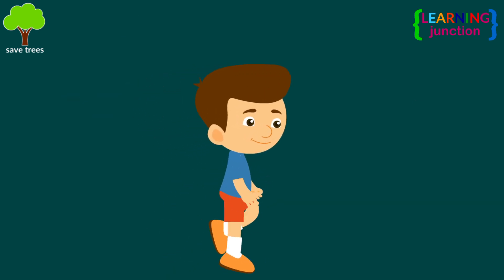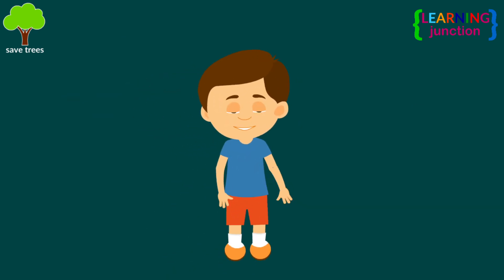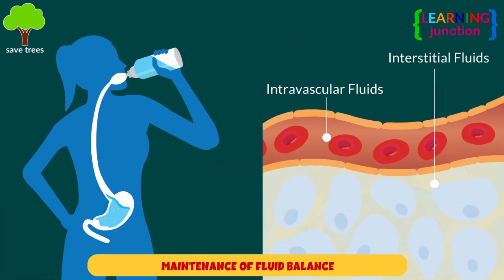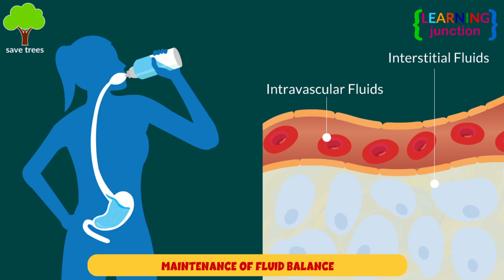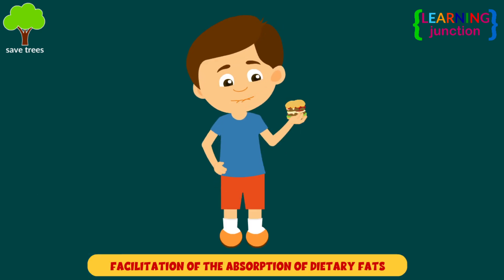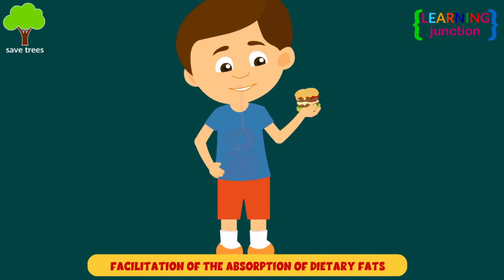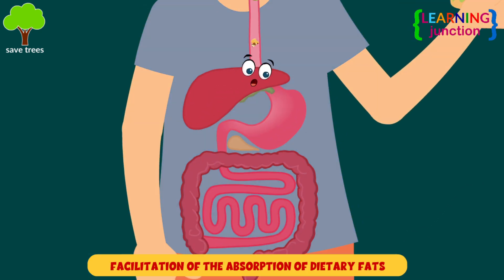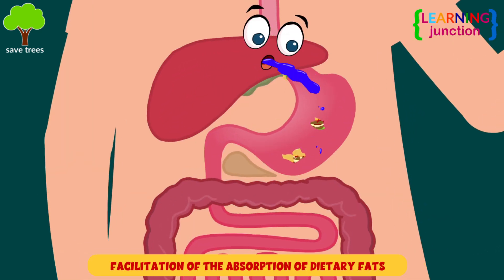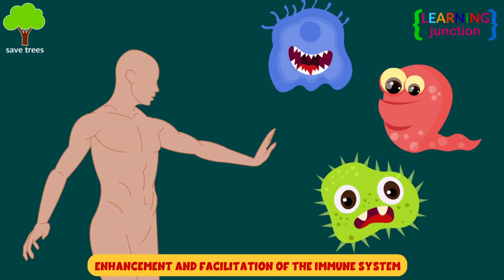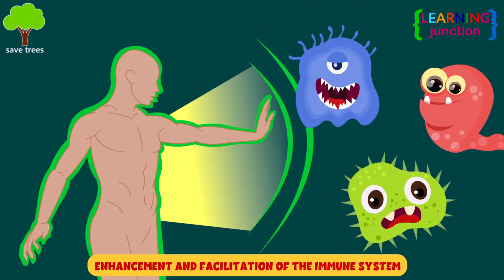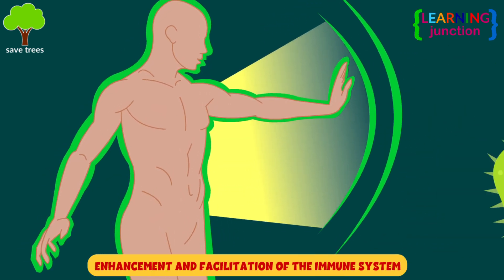There are three main functions of the lymphatic system. First, maintenance of fluid balance. Second, facilitation of the absorption of dietary fats from the gastrointestinal tract to the bloodstream. And third, enhancement and facilitation of the immune system.